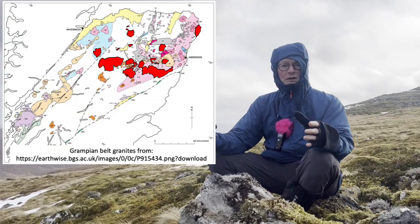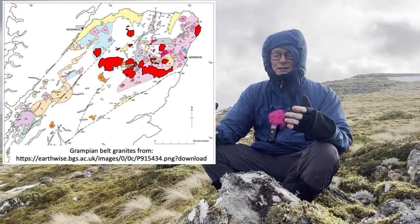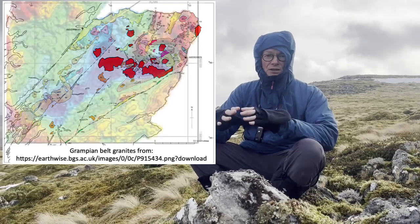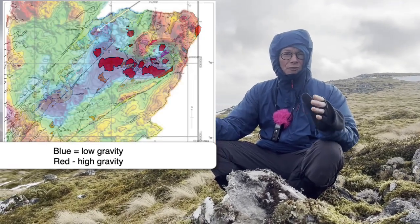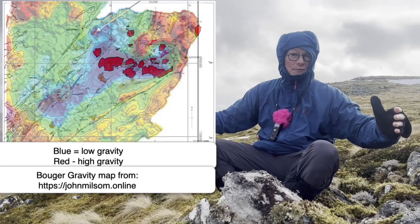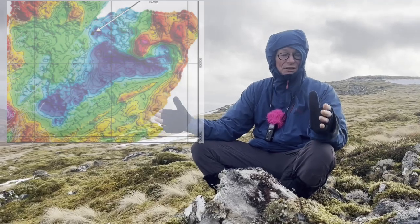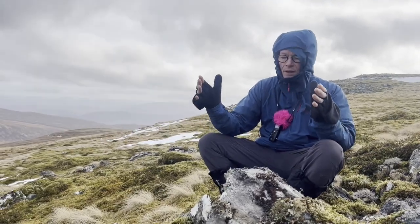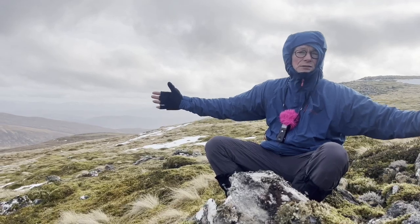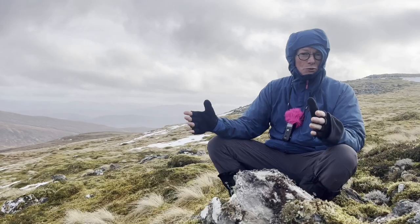The Monadhliath granite is part of the Cairngorm series of granites, and there's good evidence that at depth they're connected. There is a large low-gravity anomaly that covers all of the Cairngorm-type granites, which is indicative of a low-density body at depth — which is granite. Granites are low density, so the size of this Cairngorm granite at depth is at least ten times larger than the Cairngorm outcrop itself.